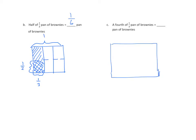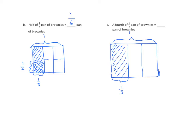A fourth of a third of a pan of brownies. Again, we'll start with our second factor. We divide this into three equal parts — this is one-third, we'll shade it. Now we need to partition it horizontally into four equal parts. We'll label this one-fourth and shade it going the second direction.